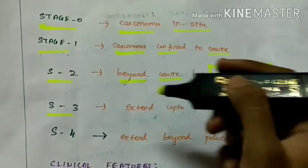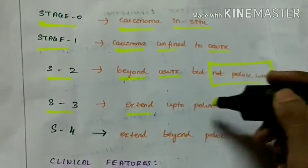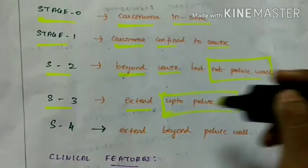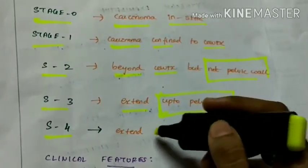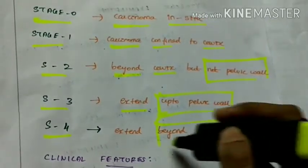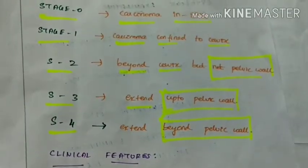Stage 3, it extends up to the pelvic wall and the stage 4, it extends beyond the pelvic wall. This is the stages of cervical cancer.